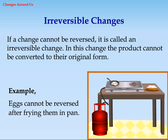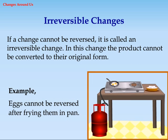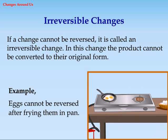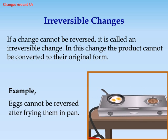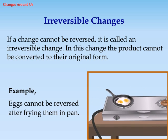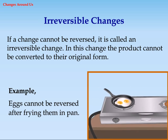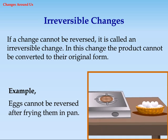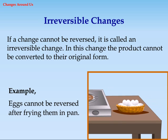Irreversible Changes. If a change cannot be reversed, it is called an irreversible change. In this change, the product cannot be converted to its original form. Example: eggs cannot be reversed after frying them in a pan.